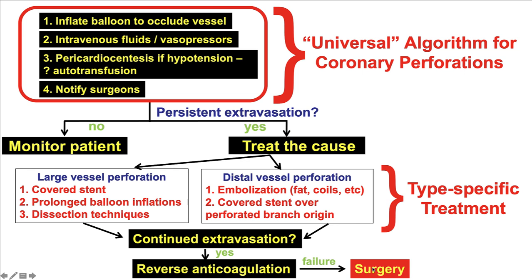To summarize, coronary perforation can be a severe, catastrophic complication. There are four universal steps: first, inflate a balloon; second, give fluids and possibly vasopressors; if tamponade happens, do pericardiocentesis; and notify the surgeons. Then, if there is continued extravasation, use a covered stent for large vessel perforation or coils/fat for distal vessel perforation. If there is still extravasation, remove the wires and balloons and reverse the heparin. If there is still continued extravasation, cardiac surgery may be required.